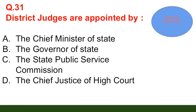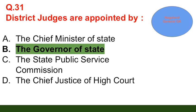Question number 31: District judges are appointed by — option A: the Chief Minister of the state; option B: the Governor of the state; option C: the State Public Service Commission; option D: the Chief Justice of the High Court. The correct answer is option B — the Governor of the state.